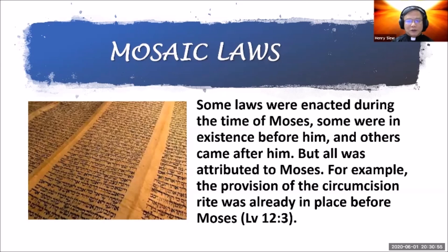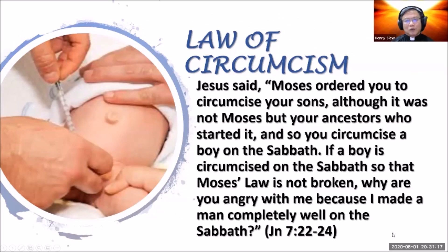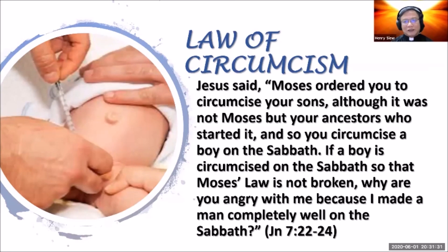Scholars discovered that some laws were actually enacted during the time of Moses, but some were already in existence way before him, and others came after him — yet all was attributed to Moses. For example, the provision of circumcision was already in place way before Moses. Jesus himself said in one dialogue: 'Moses ordered you to circumcise your sons, although it was not Moses' — meaning it was not Moses but your ancestors who started it.